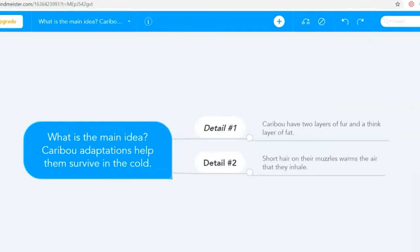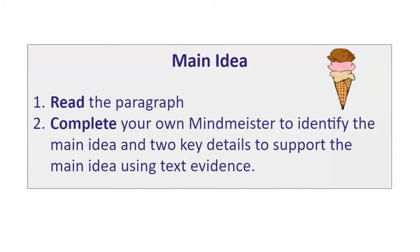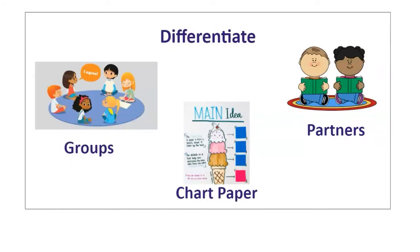Then I show them how to use MindMeister to record the two key details by typing in their responses. After we complete the map together, I explain that they're going to try it on their own. Prior to the lesson, I differentiate the next step based on their Lexile level. The directions will be the same for all students: read the short paragraph, then complete your own MindMeister to identify the main idea and two key details to support the main idea using text evidence. This part of the lesson can easily be modified — students can work in pairs or larger groups. If you don't have access to technology, you can have the paragraph printed out and a map drawn on paper, or placed on chart paper for larger groups.